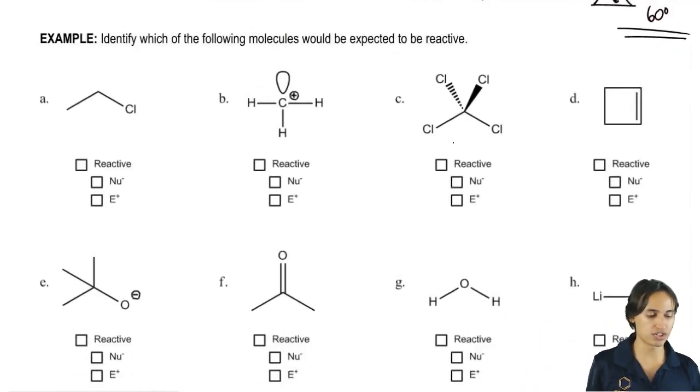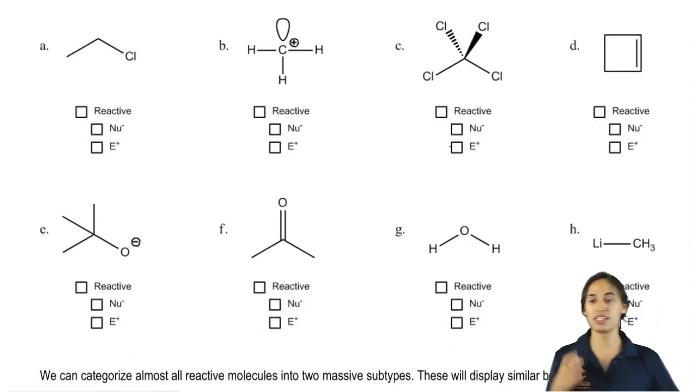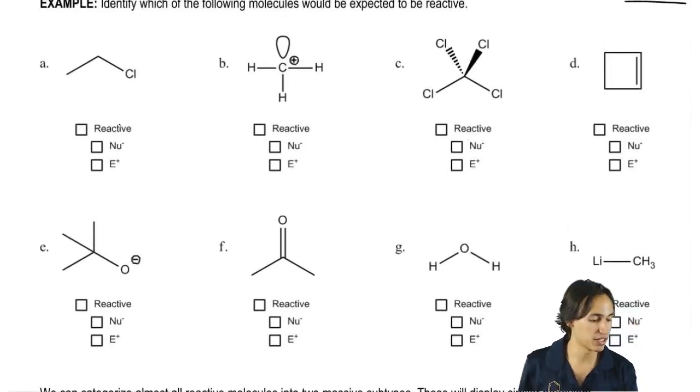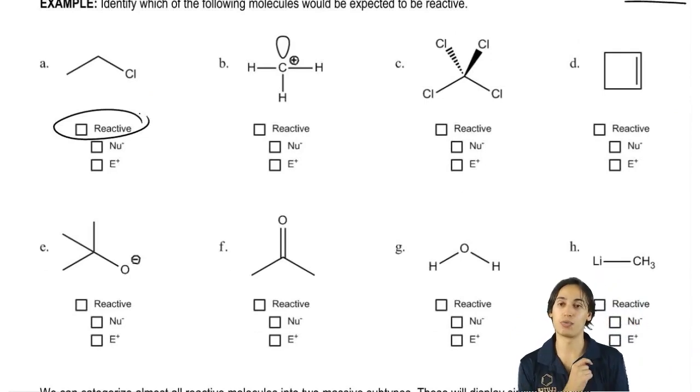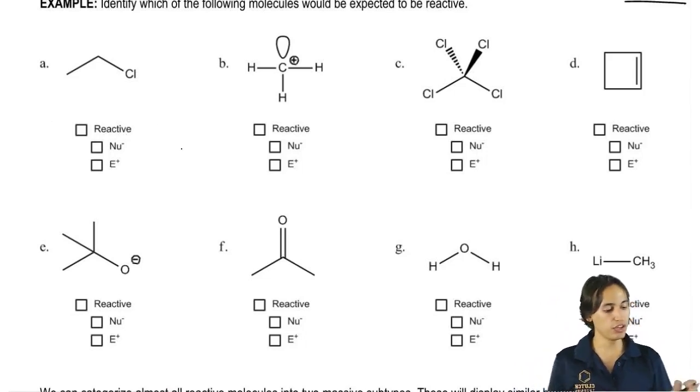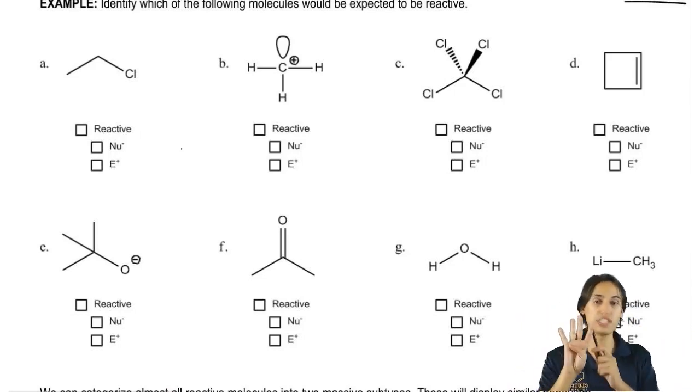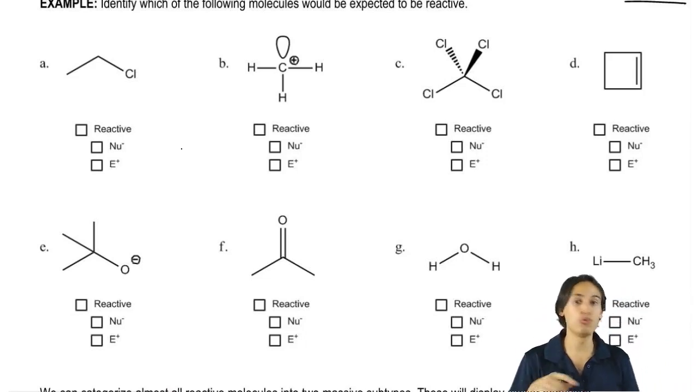So what I want to do is move on to an exercise and I want you guys to look at these eight different compounds and just go ahead and look at the first box. The first box is literally a check box. I want you to either check off that it is reactive or put an X on it if it is not reactive. So I want you to go through maybe A through D, the first four, and I want you guys to look at those first four and see if you can find any of those four reasons why it would be reactive. If you can't, then that means it's not going to be reactive.